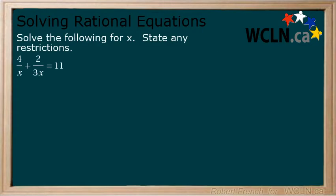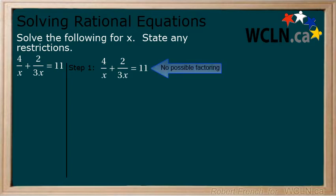Consider the following example. Solve the following equation and state any restrictions. Step 1. Factor the denominator. We can skip this step as the denominators cannot be factored in this example.